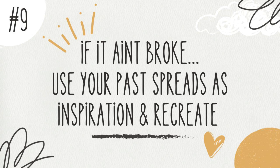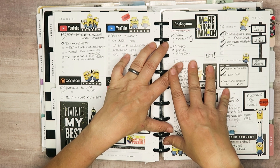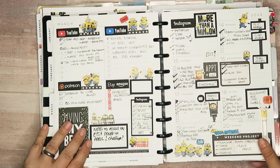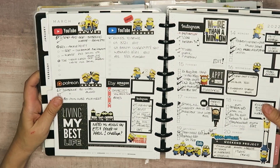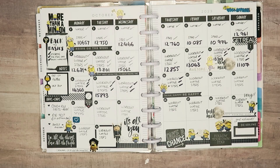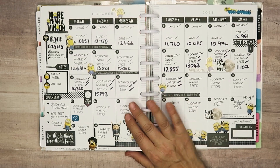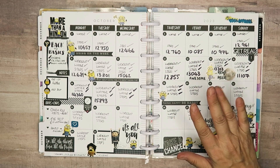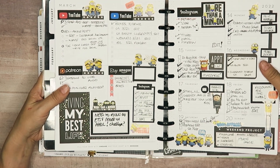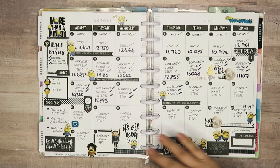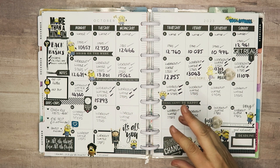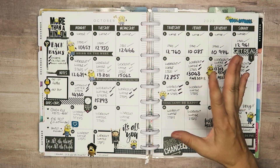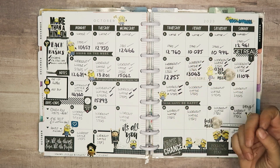Tip number nine is to recreate your own past spreads. If you know you have enough stickers to make another spread, just do it again. This was a dashboard spread from March of last year with black and minions stickers, and I recreated the same concept in my monthly for October this year. Stop trying to reinvent the wheel — if you really like something, just repeat it.